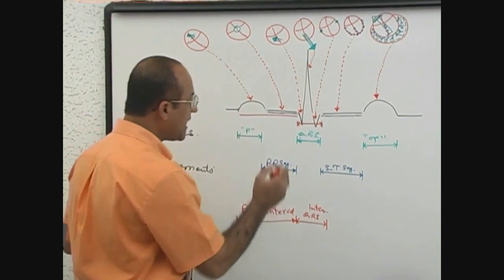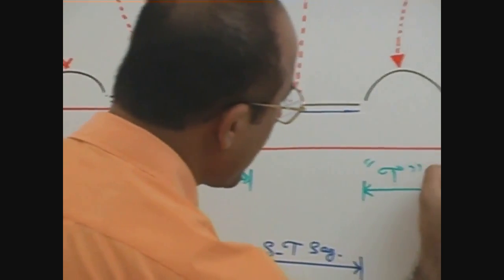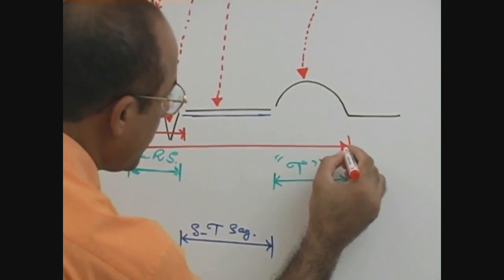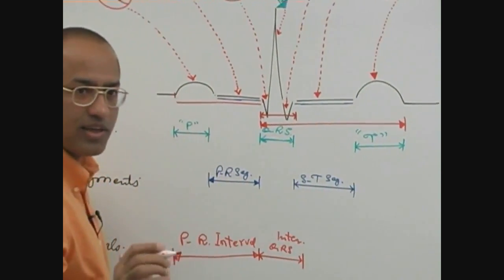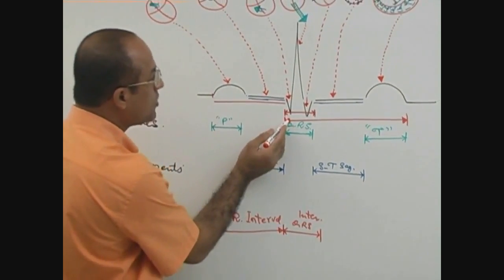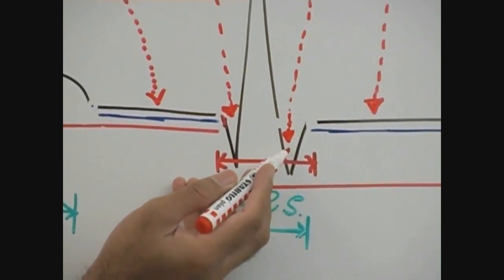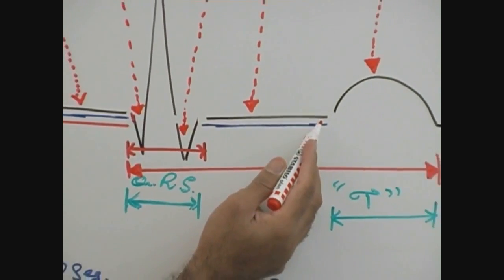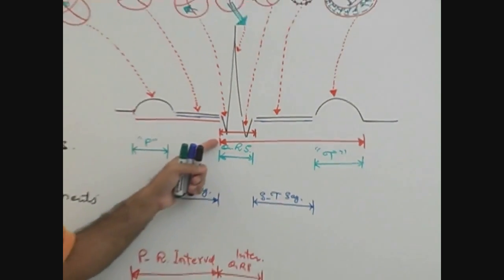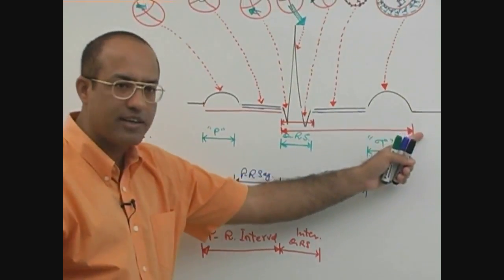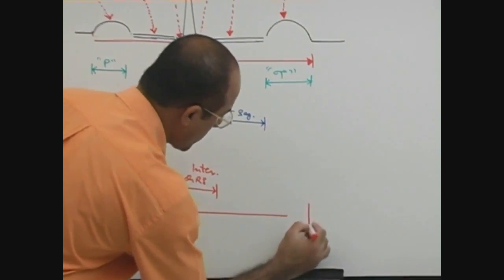Another interval starts at the beginning of QRS and ends at the end of the T wave. This duration — from the beginning of QRS up to the end of the T wave — includes septal depolarization, major ventricular depolarization, basal depolarization, the plateau phase of the action potential, and the onset and termination of repolarization. This interval is called the QT interval.